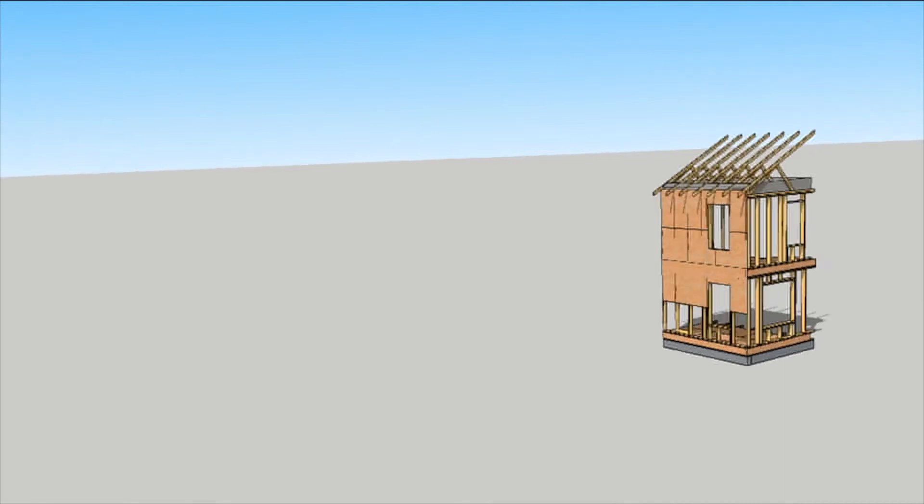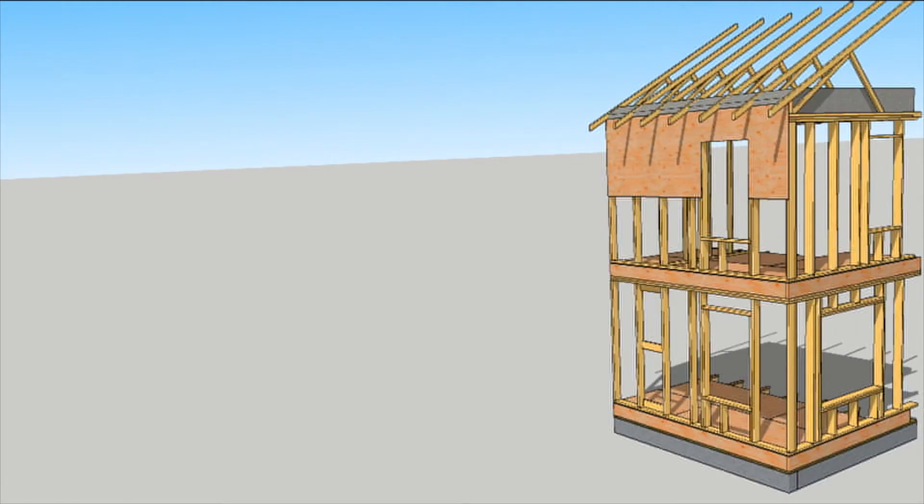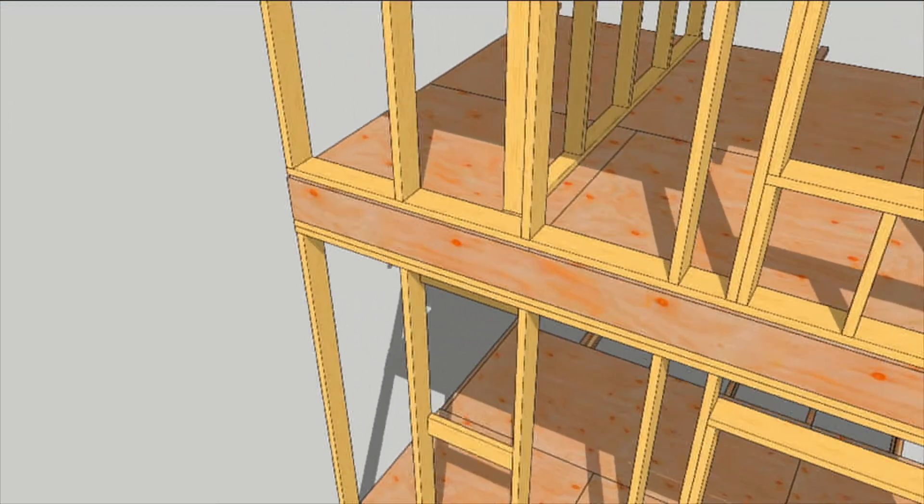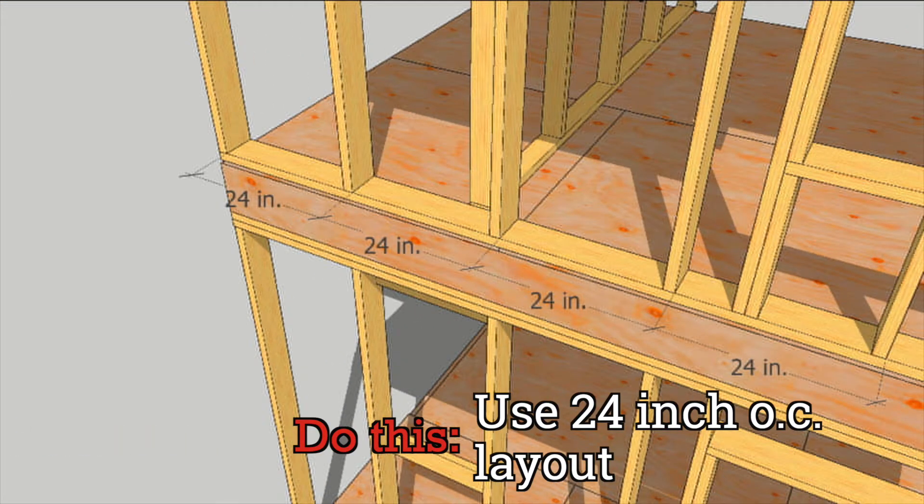Framing details can make buildings much better, but as an architect, not all framing decisions are in your control. Here are some do's and don't bothers when specifying framing details. Do use 24 inch on-center layout. It makes more room for insulation and cuts thermal bridge potential.